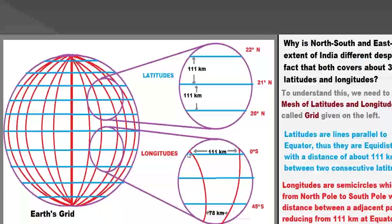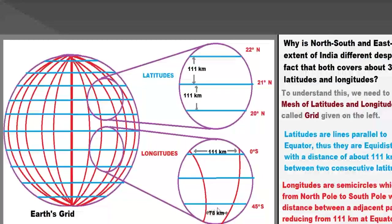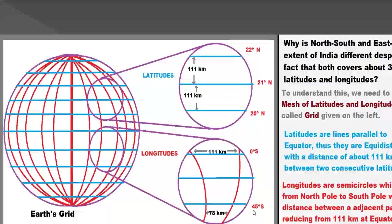Just look at the diagram — the distance is decreasing towards the pole. The 30-degree east and 31-degree east longitudes are shown. At 0 degrees (equator), the distance between them is 111 kilometers, and at 45 degrees latitude, it is about 78 kilometers. This distance keeps reducing as we move towards the pole, and at the pole itself it becomes 0 kilometers, because they join there.